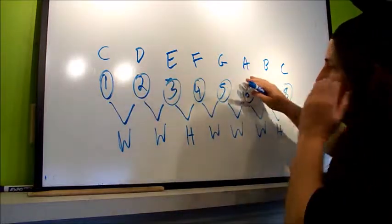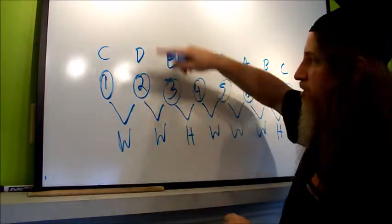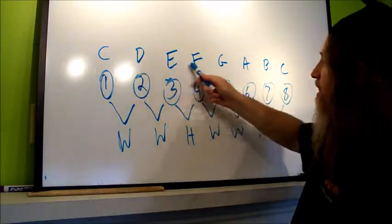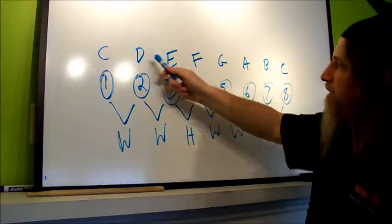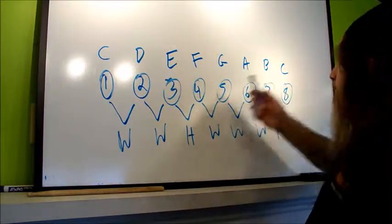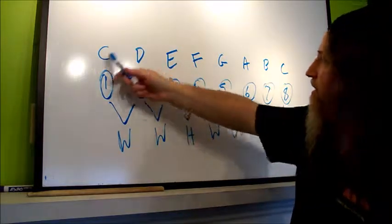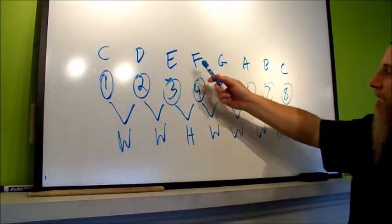Remember that the first and eighth note are the same note. I like to think of notes as being just a circle. So it goes C, D, E, F, G, A, B, C, D, E, F, G, A, B, C, D, E. Higher and higher or lower and lower going backwards. You know, C, B, A, G, F, E, D, C, B, A, G, F, E, D, C.